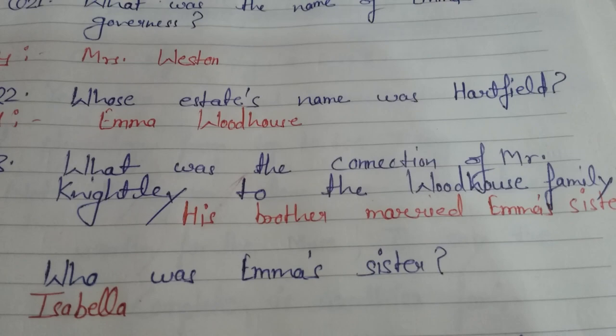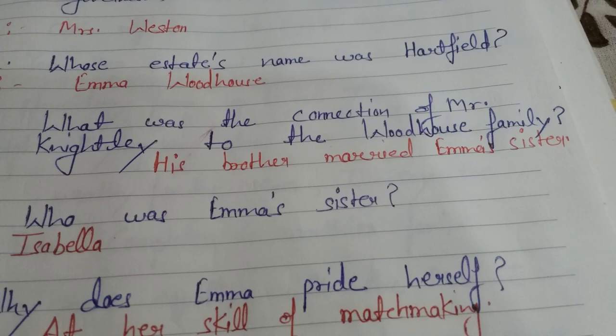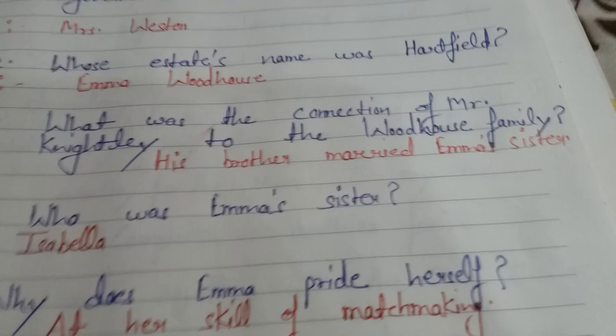Question 23: What was the connection of Mr. Knightley to the Woodhouse family? Mr. Knightley ka Woodhouse family se kya connection tha? His brother married Emma's sister. Knightley ka bhai tha, wo Emma ki sister se uski shadi hui thi. Emma ki sister kaun thi? Isabela. Isabela was Emma's sister.